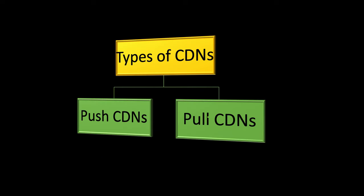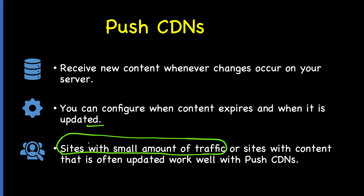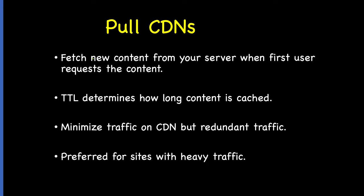Now let's see the different types of CDNs. We mainly categorize them into push CDNs and pull CDNs. Push CDNs receive new content whenever changes occur on your server — you take the responsibility of uploading content directly to the CDN and rewriting URLs to point to the CDN. You can also configure when content expires and when it is updated. Push CDNs are mainly suitable for sites with a small amount of traffic or sites with content that is not often updated.